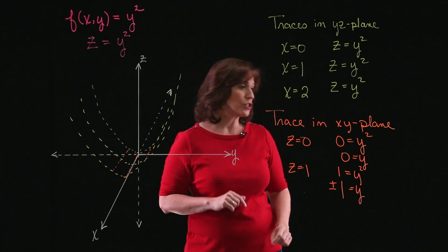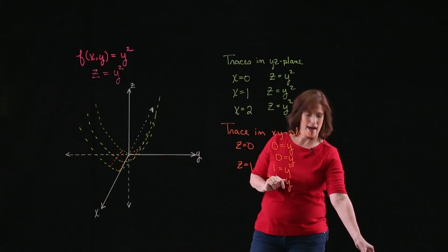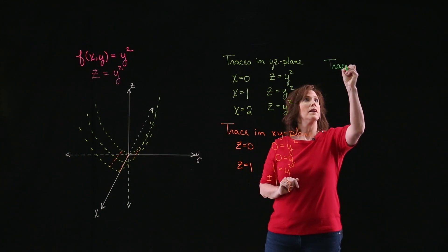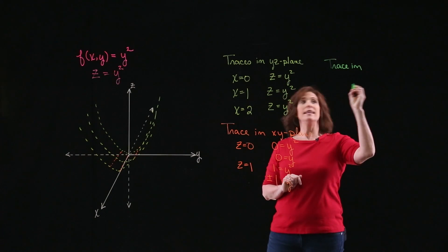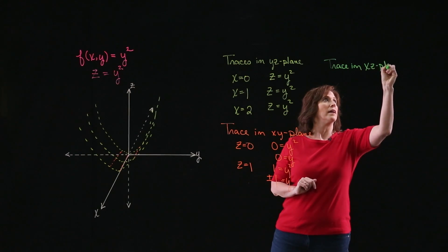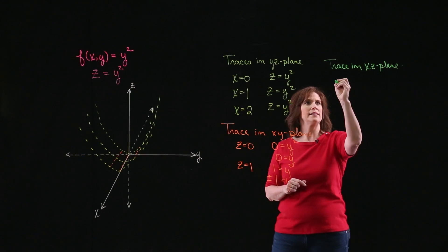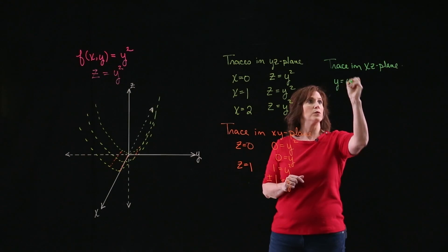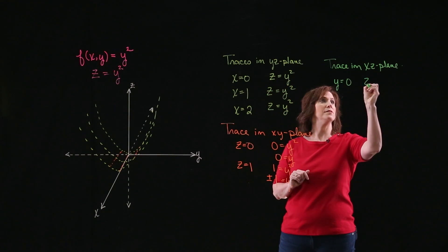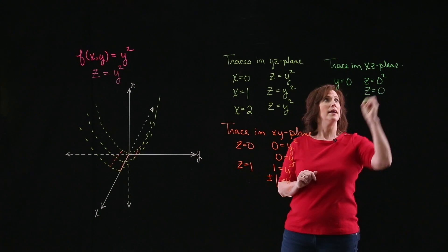OK, one last trace. I've tried the yz-plane, the xy-plane. I also need a trace in the xz-plane. So if I look at traces in the xz-plane, let's take y to equal 0, first of all. If y equals 0, my equation turns into z equals 0 squared, or z equals 0.